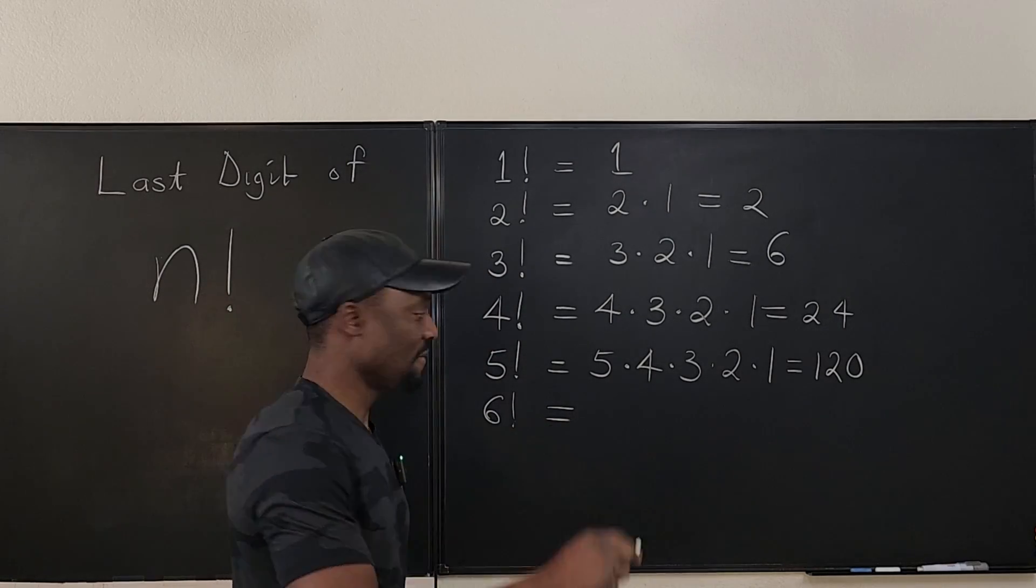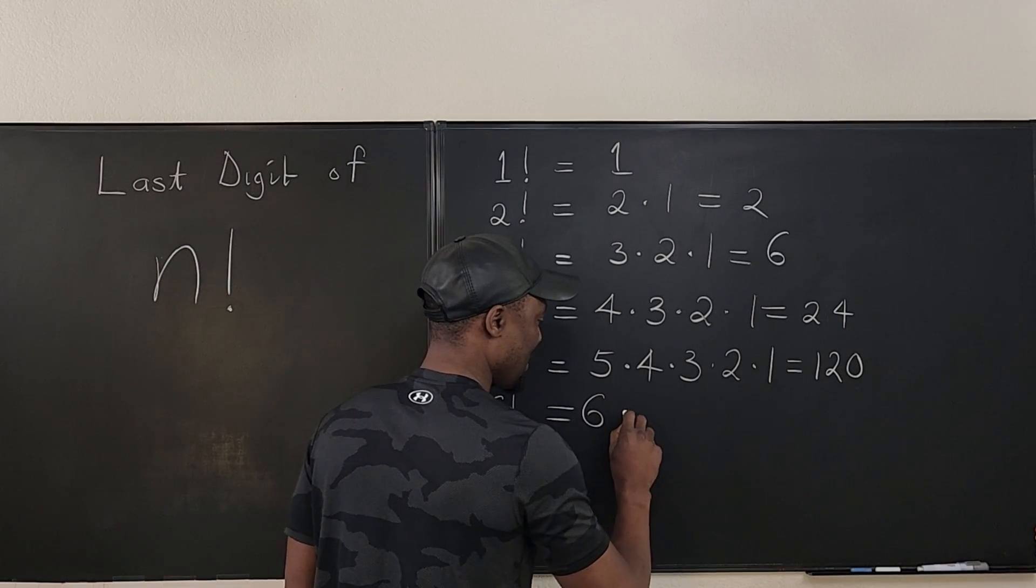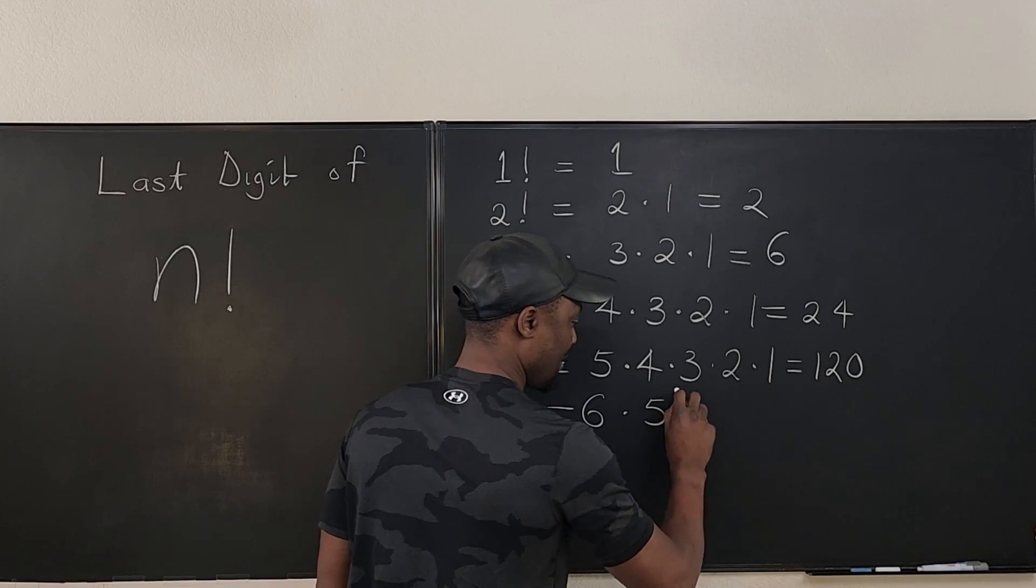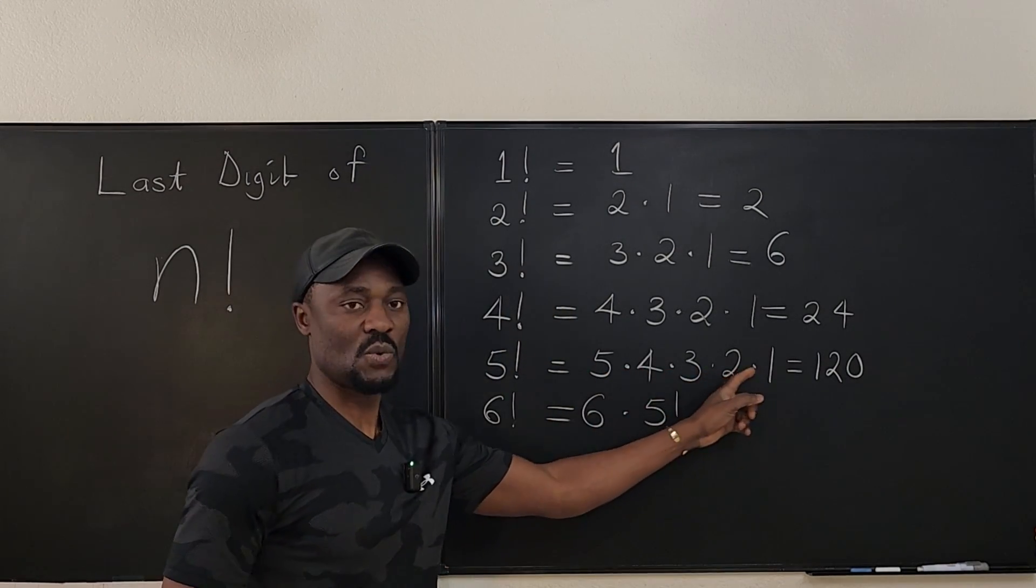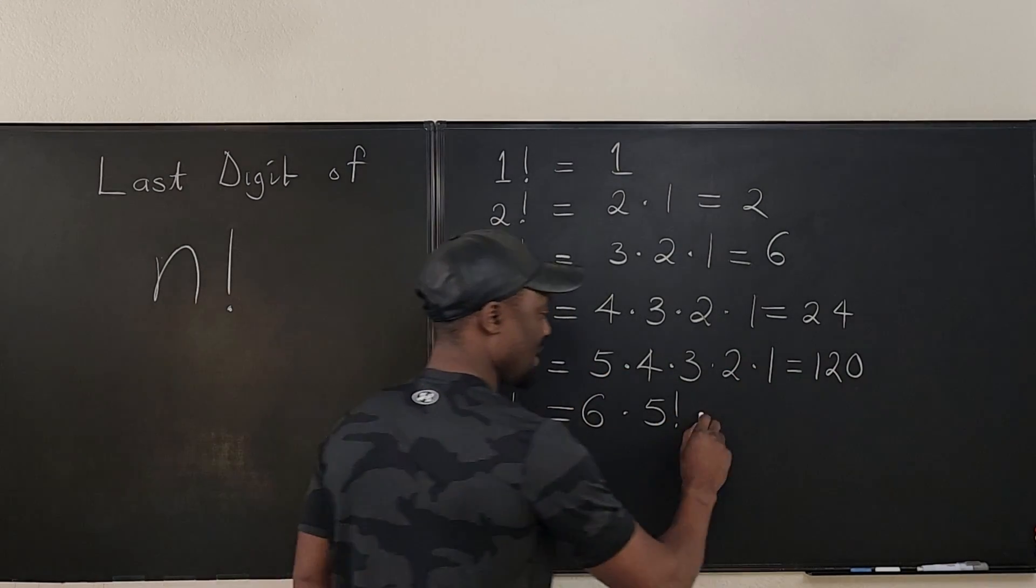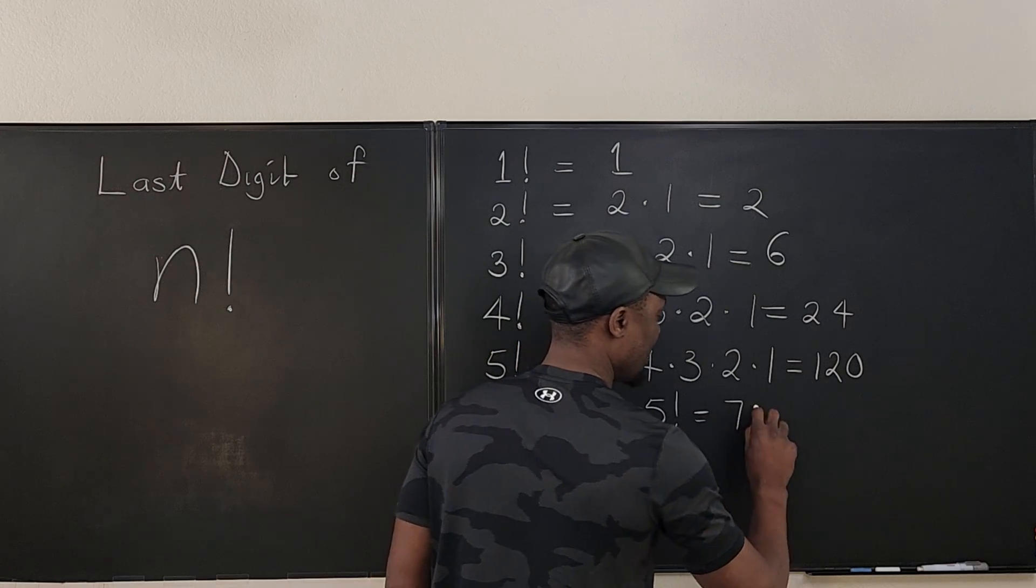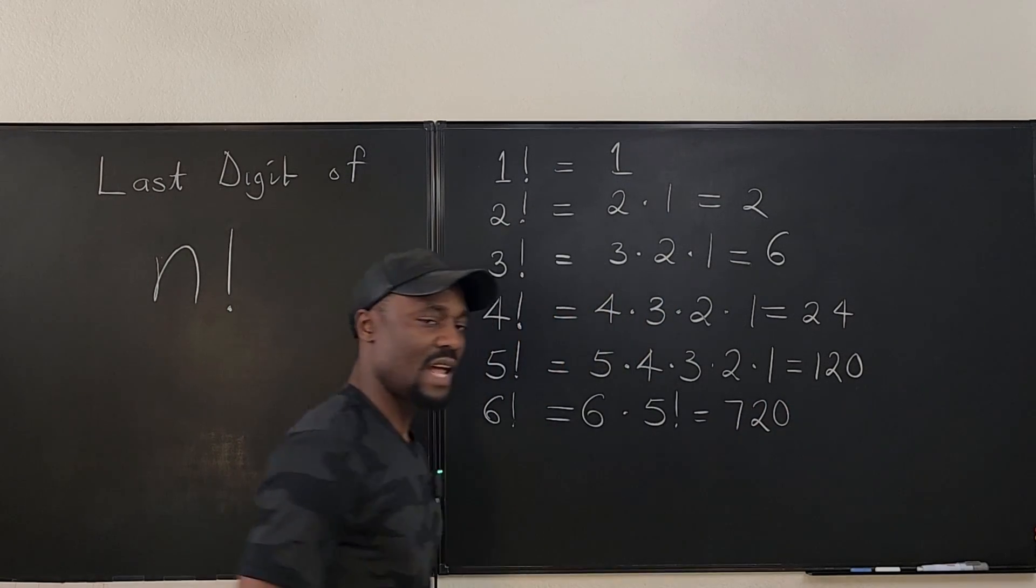So whatever you do from now on, this is going to be six times five factorial. It's six times five times four, which is five factorial, which is six, which is 720. So you see that the last digit is zero.